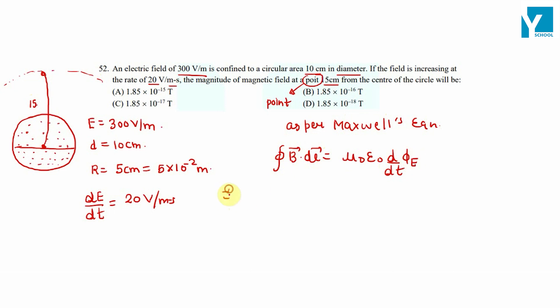So this implies B into 2 pi r where r is equal to 15 centimeter, that is 15 into 10 raised to minus 2 meter, is equal to mu_0 epsilon_0 times d by dt of E into pi R squared.